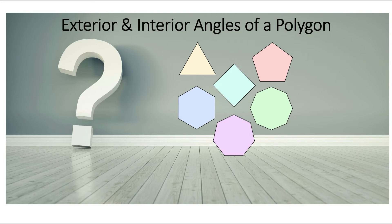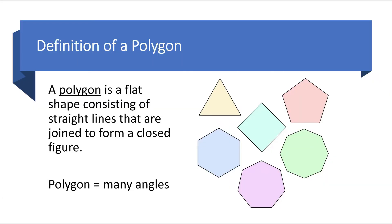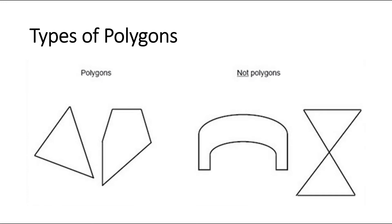Before investigating the relationship between interior and exterior angles of polygons, let's first define the word polygon. The word polygon comes from the Greek word — poly means many and gon means angles. A polygon is a flat shape consisting of straight lines that are joined to form a closed figure. Technically speaking, a triangle is also a polygon because it consists of many angles. It is also worth noting that polygons consist of straight lines — the lines are not curved and they do not intersect.